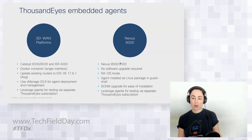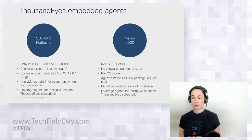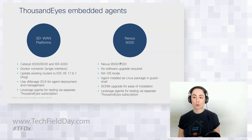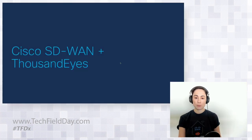The Nexus 9K integration is coming later this year around the October-November timeframe. The idea is that you won't need to upgrade in order to take advantage of it — you'll be able to just deploy it once it's available.